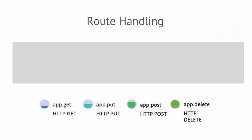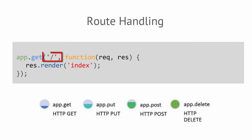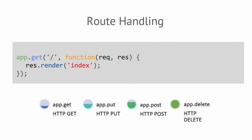We can define our routes using standard GET, PUT, POST, and DELETE verbs. Our first parameter sets the location of our route. Our second parameter is a function that accepts a request and response object. The request object represents incoming HTTP requests. The response object is something you give to the user — such as a web page, an image, or data like JSON or XML. In the example below, when a GET request is made to our root URL, we respond by rendering our index file located in our views folder.